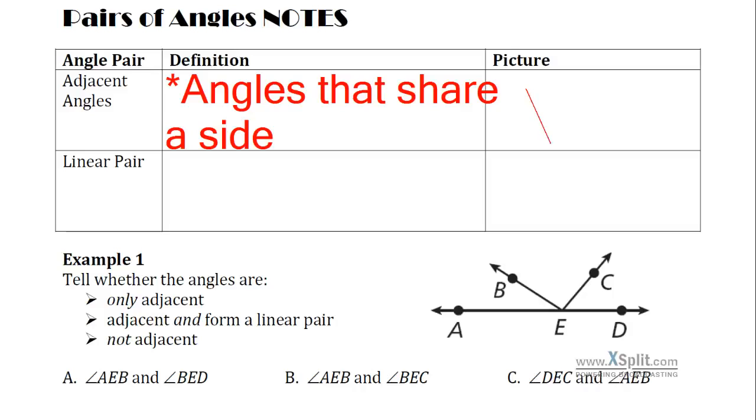So you might see an angle, let's say we have this angle right here. Another angle that's adjacent to it might look like that, where they certainly share a side together. They have this one middle side that they definitely share together, so they're considered adjacent.